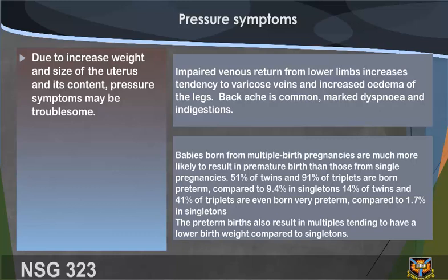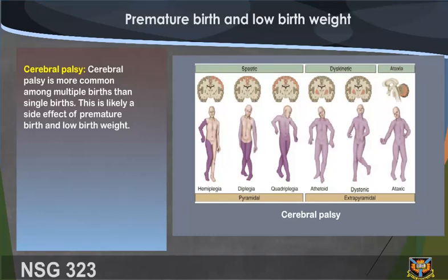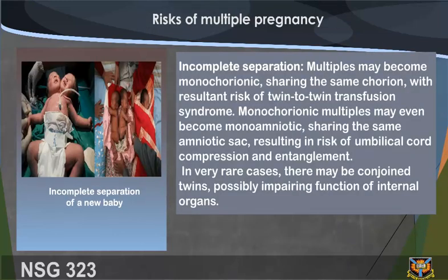Babies born from multiple birth pregnancies are much more likely to result in premature birth than those from single pregnancies. 51% of twins and 91% of triplets are born preterm, compared to 9.4% in singletons. 14% of twins and 41% of triplets are born very preterm, compared to 1.7% in singletons. Preterm birth also results in multiples tending to have a lower birth weight. Cerebral palsy is more common among multiple births than single births, likely as a side effect of premature birth and low birth weight.